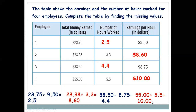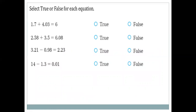You have to be thorough with all decimal division and multiplication operations. Now select true or false for each equation. You have to work it out: 1.7 + 4.03 = 6 — is it true or false? Remember, when you add or subtract decimal numbers the alignment of the decimal point is very important.